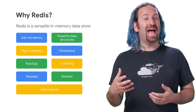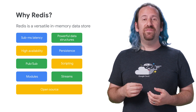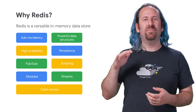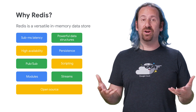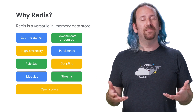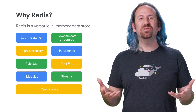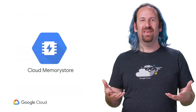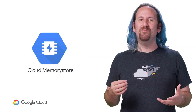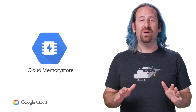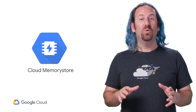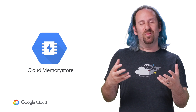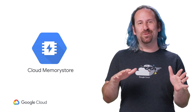When you're moving to the cloud, getting rid of infrastructure management is often top of mind, and that includes managing and monitoring your cache. So that's where Google's Cloud Memorystore comes in. Memorystore is a managed solution fully compatible with the Redis protocol, which means you get all the benefits of Redis without any of the management.